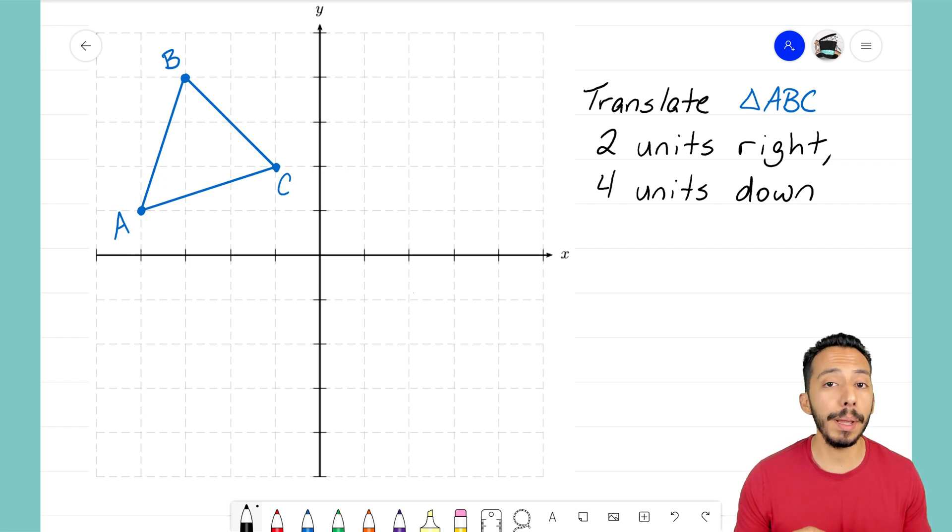So what we need to do for this problem is we need to go point by point and do the translation as it asks us to. For example, we'll start with point A here and we're going to take that point and we're going to move it two units to the right and then four units down. So let's go ahead and do that with A.